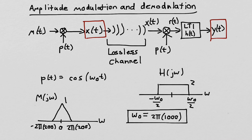So in this example, we're going to consider a basic system where we start with a signal m of t — a message signal m of t. We run it through multiplying by a signal p of t, and that gives us x of t. The p of t we'll use is cosine omega-zero t. Then we consider that we have some way to transmit x of t through a channel — say a radio link — and we'll assume for today's discussion that it's a lossless channel.